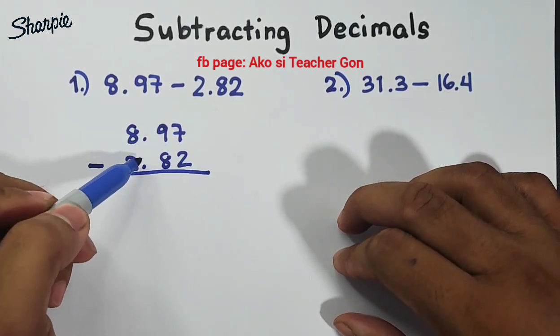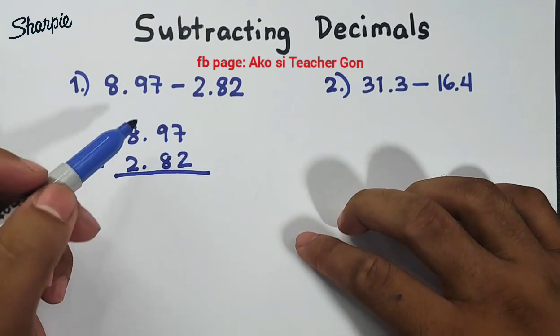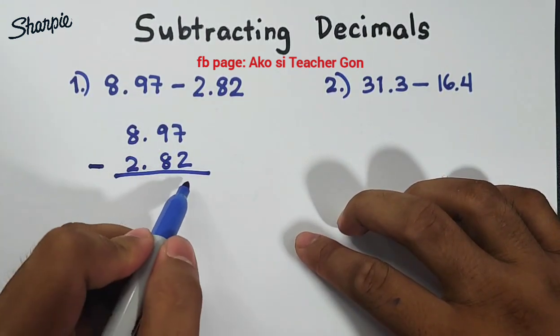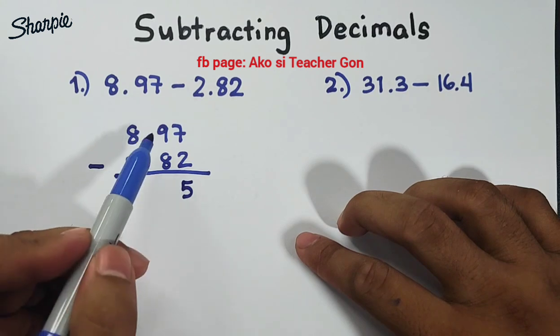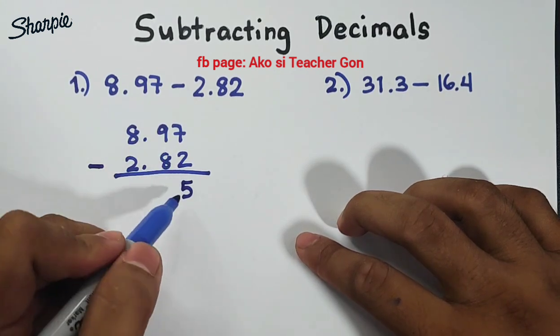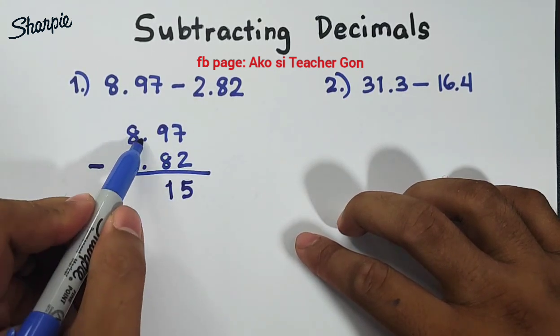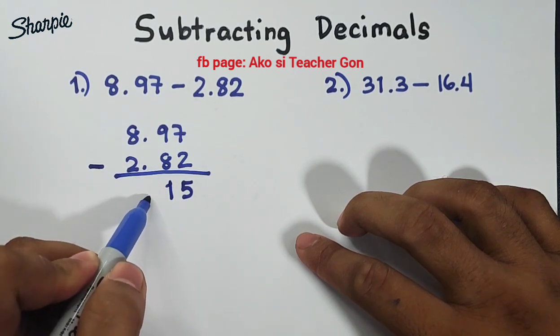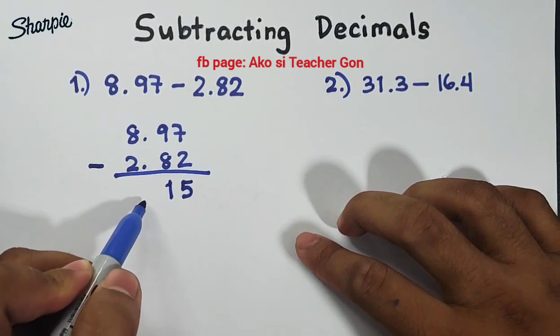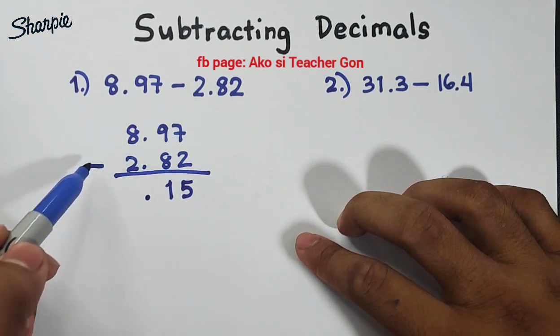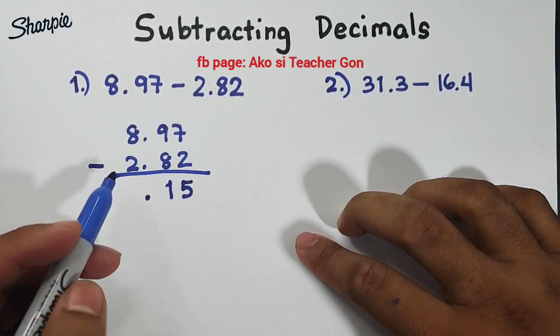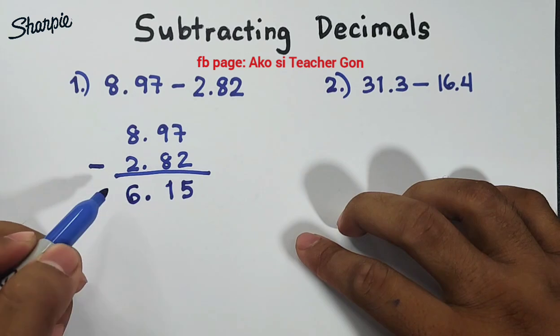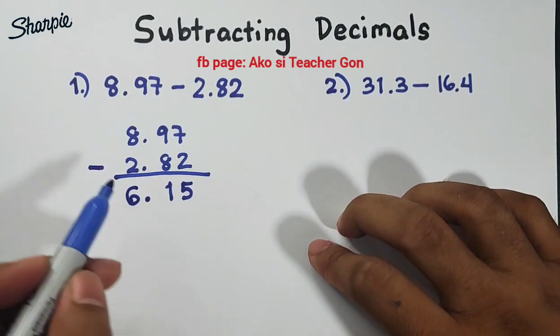So let's start. 7 minus 2 is equal to 5. 9 minus 8 is equal to 1. Then you will copy their decimal point or the location of their decimal point here and then 8 minus 2 is equal to 6. So as you can see we have here the difference between 8.97 and 2.82 as 6.15.